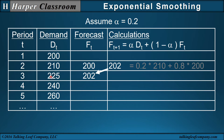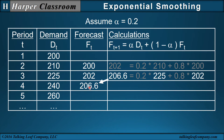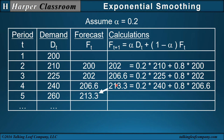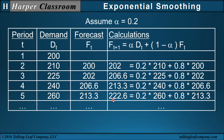Now I have my d and my f. I multiply and add — that's my forecast for the next time period. Then the next time period, I just keep going down. So it's an iterative technique. Now let's do this in Excel.